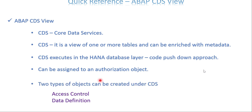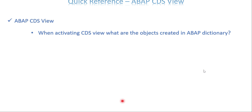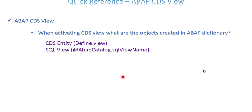Currently we are able to create two different objects under Core Data Services. You can use either Eclipse or HANA Studio to generate your CDS. One is Access Control and the other is Data Definition. When working with CDS, we mostly create the Data Definition part. Access Control is part of authorization. When activating a CDS, what are the objects created in the ABAP dictionary? The answer is there are two things: a CDS entity, which uses the 'define view' statement, and an SQL view, which uses the annotation '@AbapCatalog.sqlViewName'.